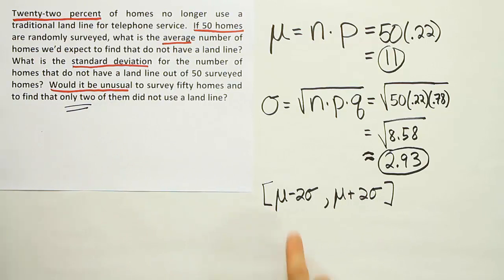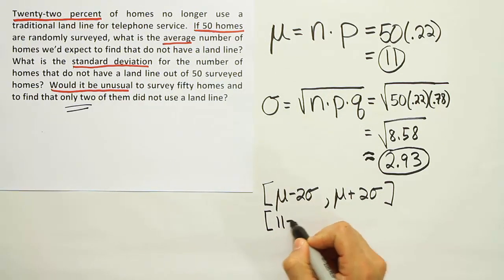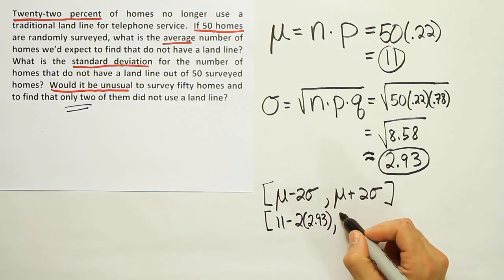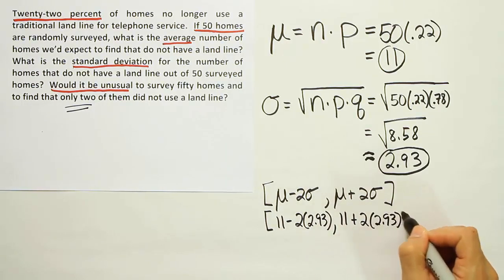Let's go ahead and do that calculation: the mean minus two sigma, the mean plus two sigma. If you're going to put in the numbers from above, you'll see that that's 11 minus two times 2.93, and 11 plus two times 2.93. So we'll fill in that formula and see what we get.